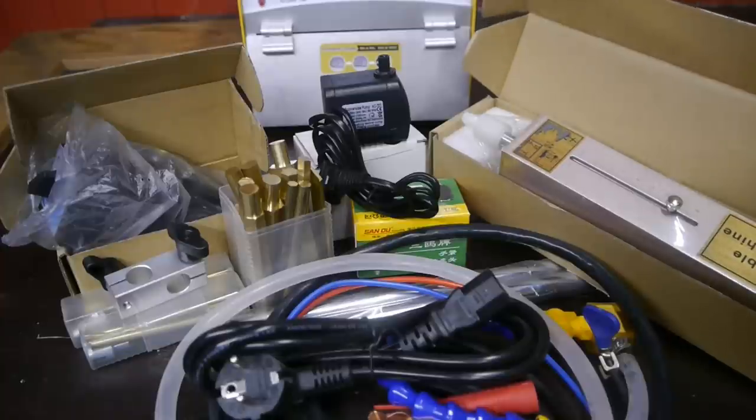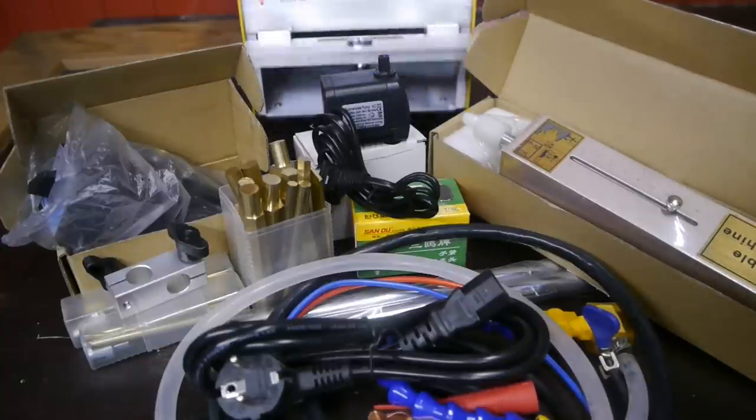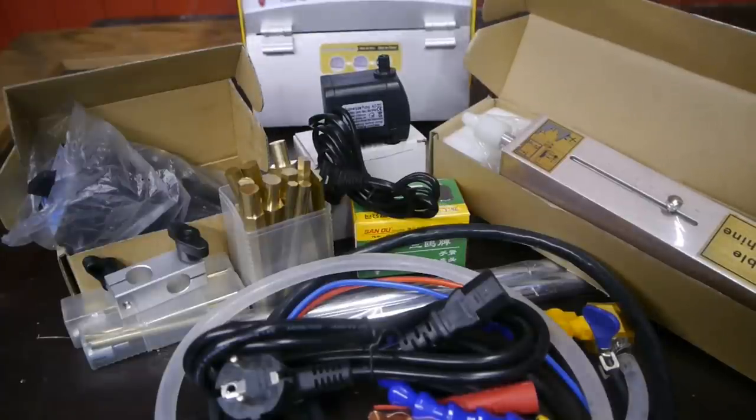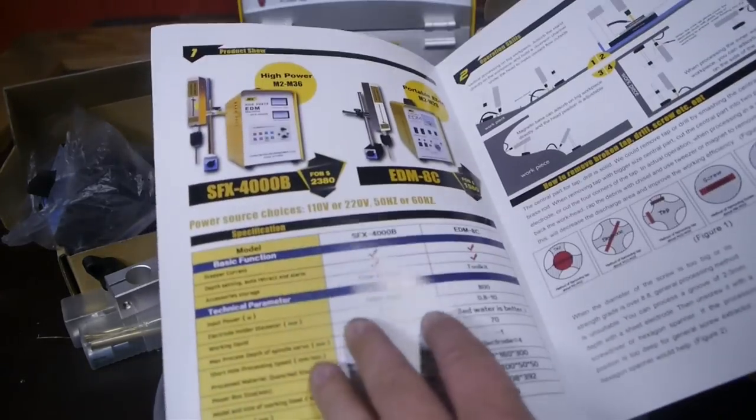These here are all the accessories that come with the machine. Everything you need to start vaporizing taps and bolts of all sizes. And all this is actually stored within the machine on the back, there's a nice little glove box to store all accessories.